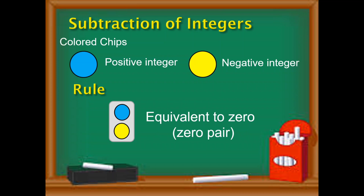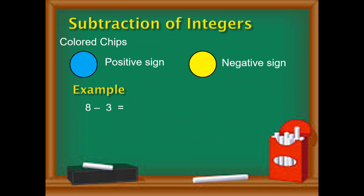Let us start with an example. So the first example: in our elementary math, we can easily determine the answer, but this time we will try to illustrate the answer using the chips. First thing to look at is the first given — the minuend. The minuend is eight, which is positive, and positive is blue. So that means we need to have eight blue chips.